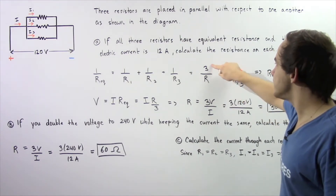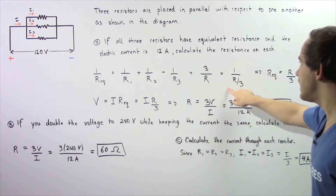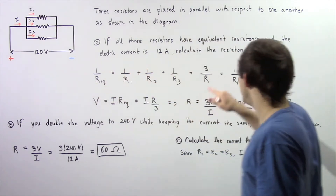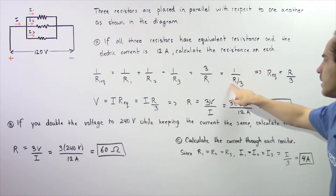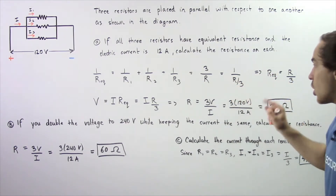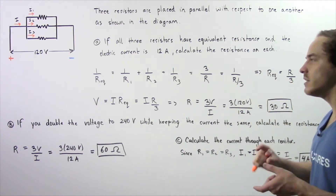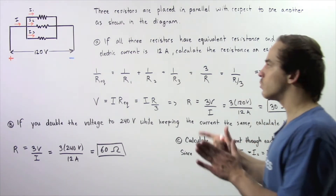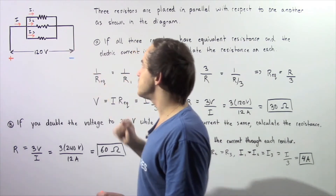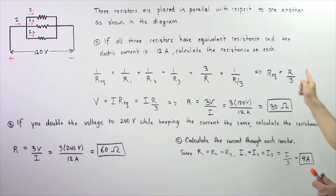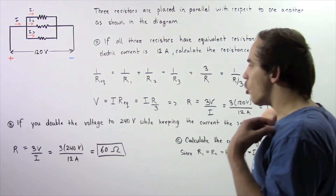Now, if we divide top and bottom by three, we get this result. We see one divided by R_equivalent is equal to one divided by R/3. So the equivalent resistance of our single equivalent resistor, which will replace these three resistors in parallel, is given by R divided by three.